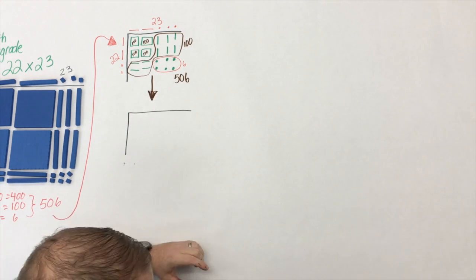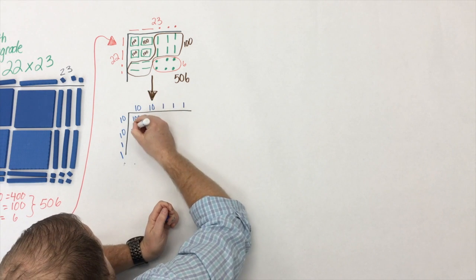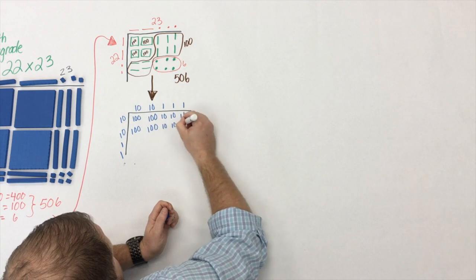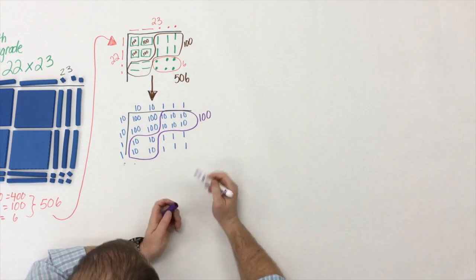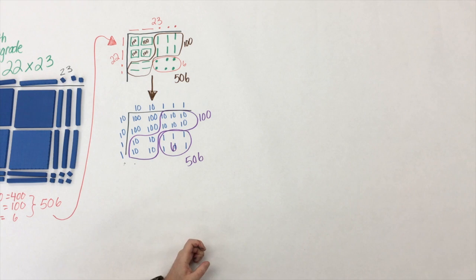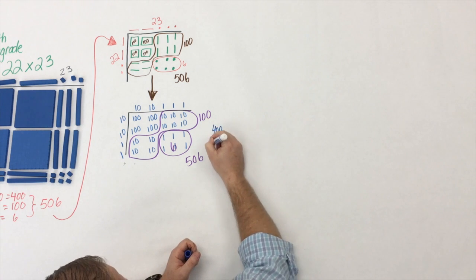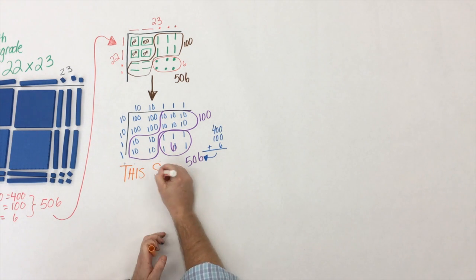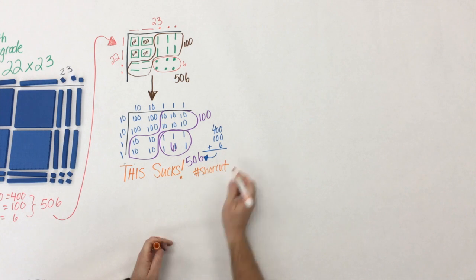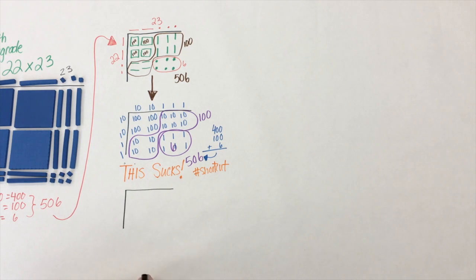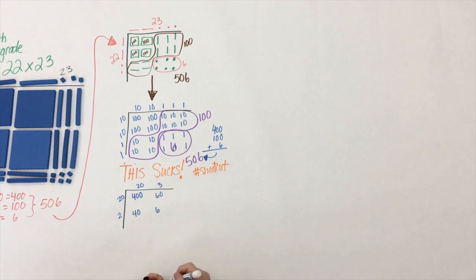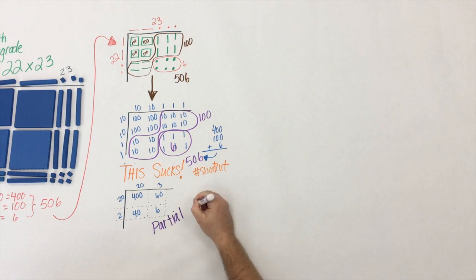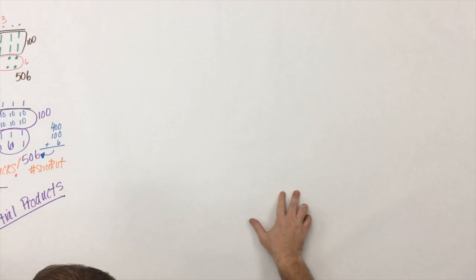Just like before, we ask students to use tens and numbers to represent their model. What you're probably thinking is: this is not efficient — there are too many tens, too many ones, and students are going to get confused. You're absolutely right, and it's at this point where kids say, 'We need to find a shortcut.' So they begin to group and collect their numbers just like they did before. This is what's called the box method, but in reality it's partial products — let's start calling it by its real name.